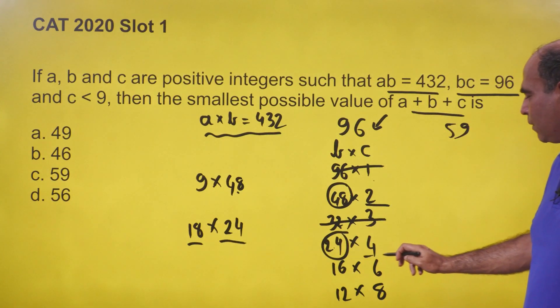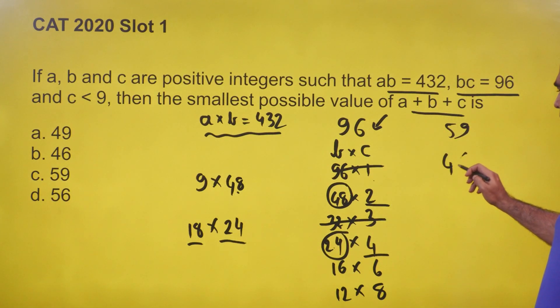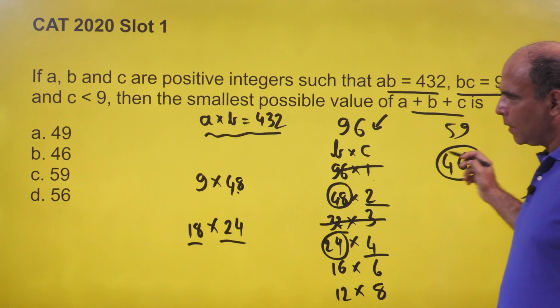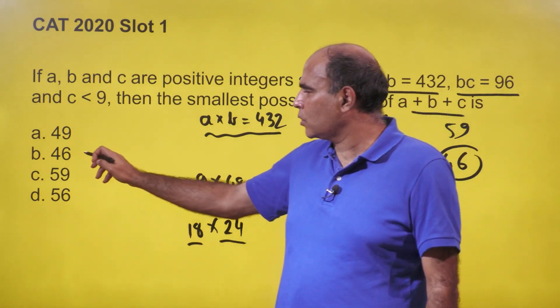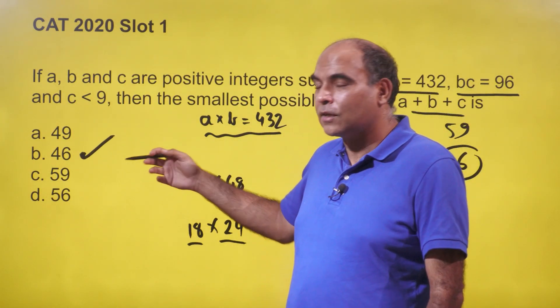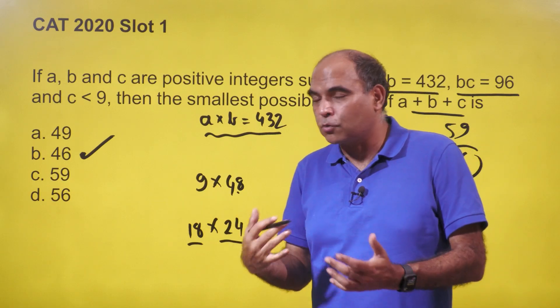So a = 18, b = 24, and c = 4. The sum a + b + c = 46. Of the four options, this is the lowest one. Once we've found 46, we can stop solving - this is our answer.